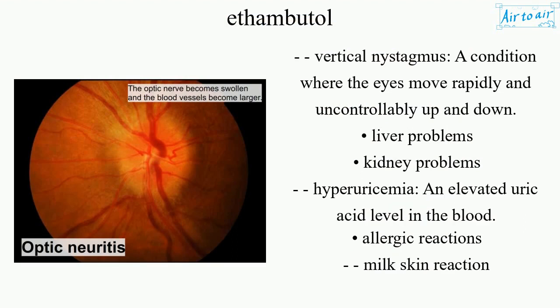Nystagmus is a condition where the eyes move rapidly and uncontrollably up and down. Other side effects include liver problems, kidney problems, hyperuricemia, and elevated uric acid level in the blood.